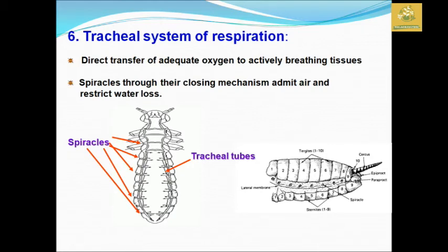We have a tracheal system of respiration. The tracheal system is in the abdomen. There is a direct transfer of oxygen via breathing tubes to the tissue. This is the tracheal system of respiration — the openings are called spiracles.